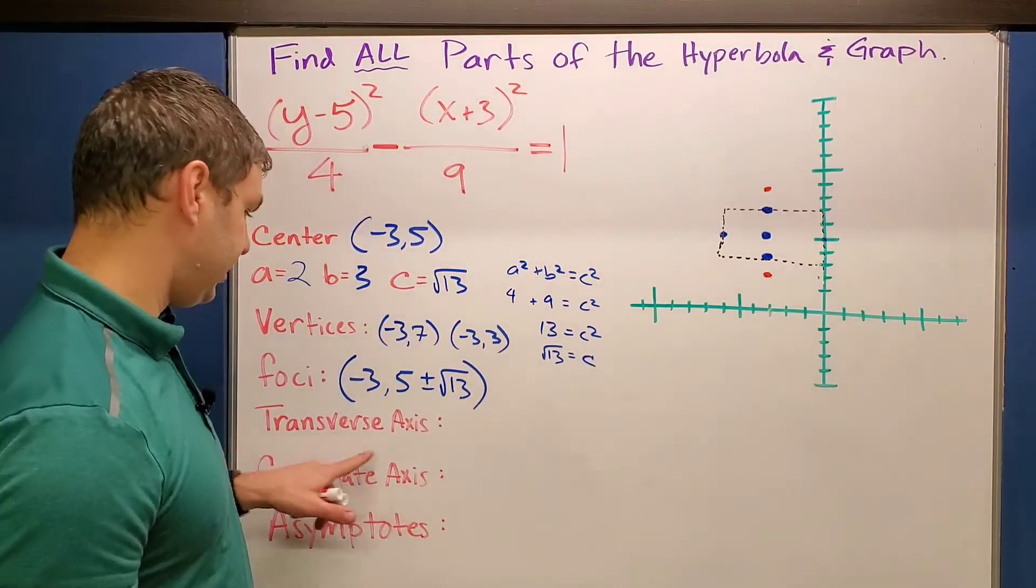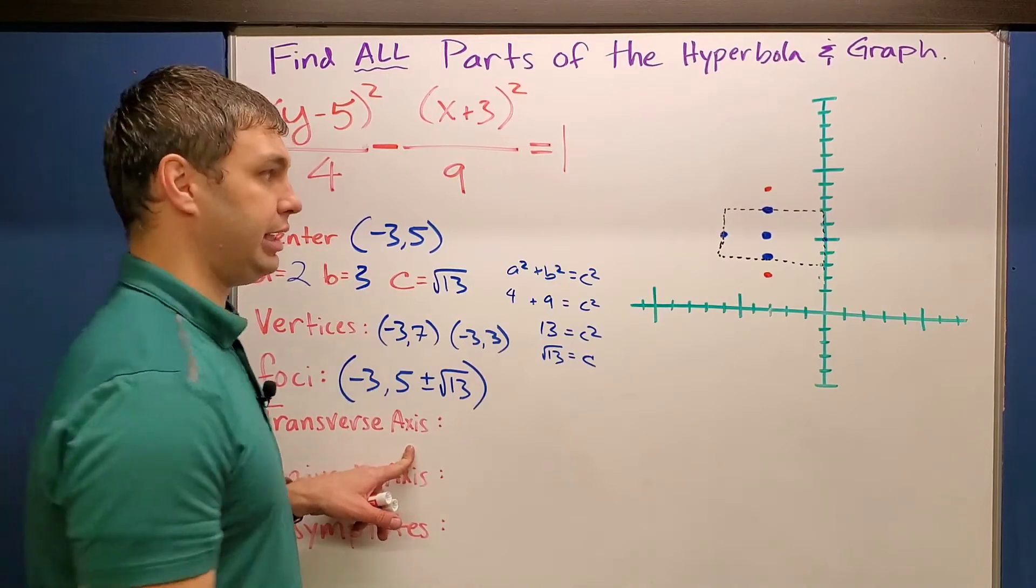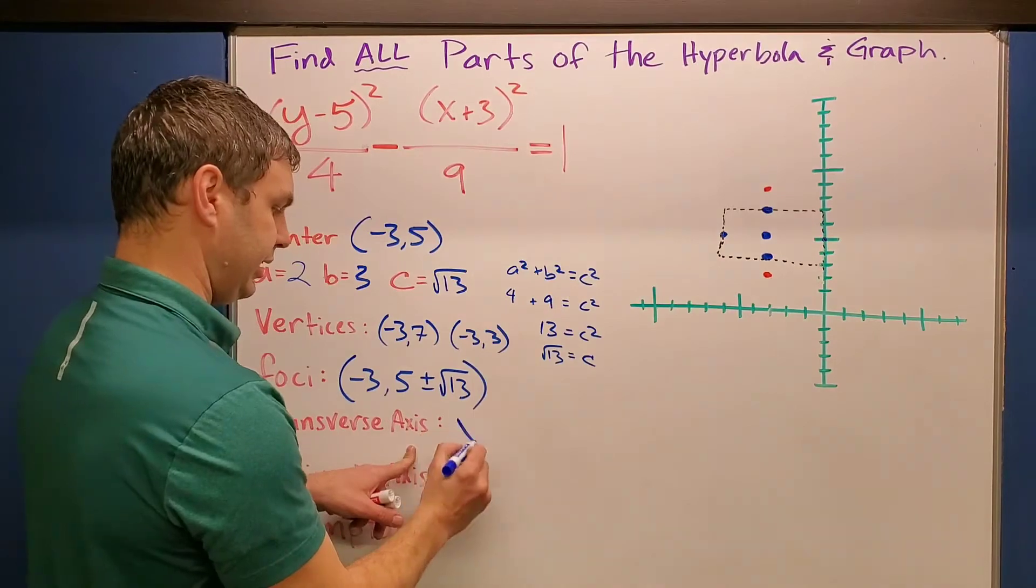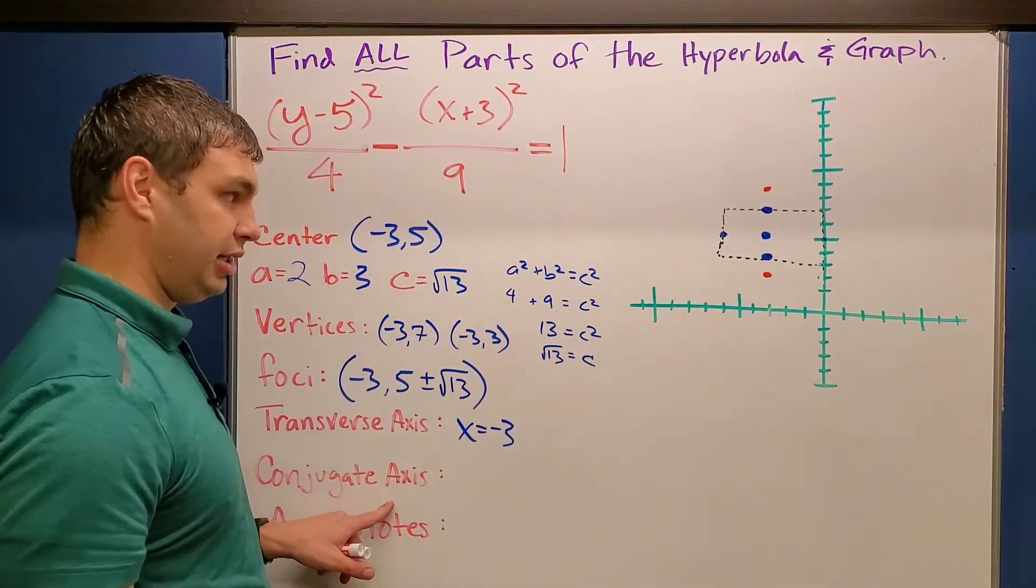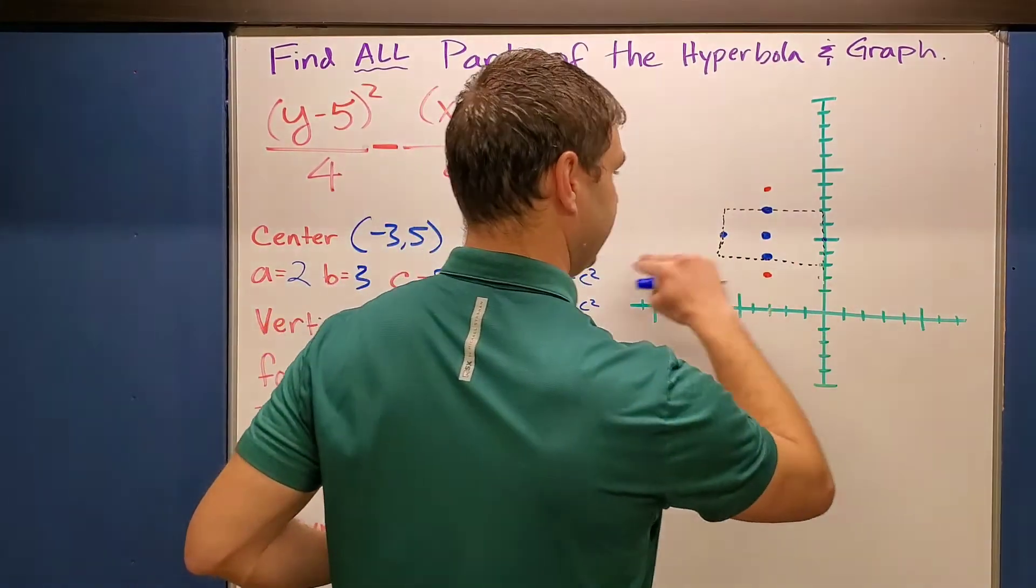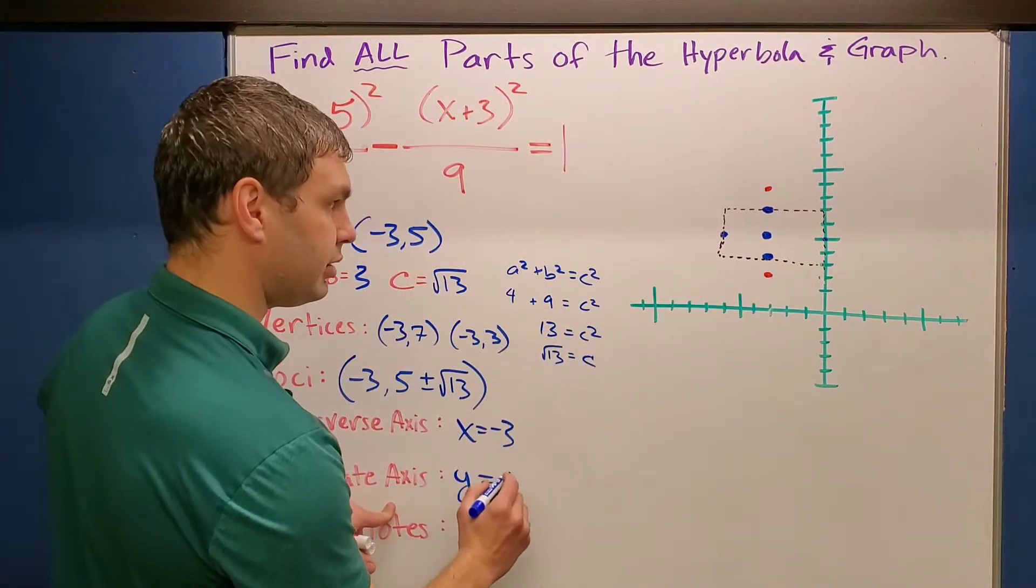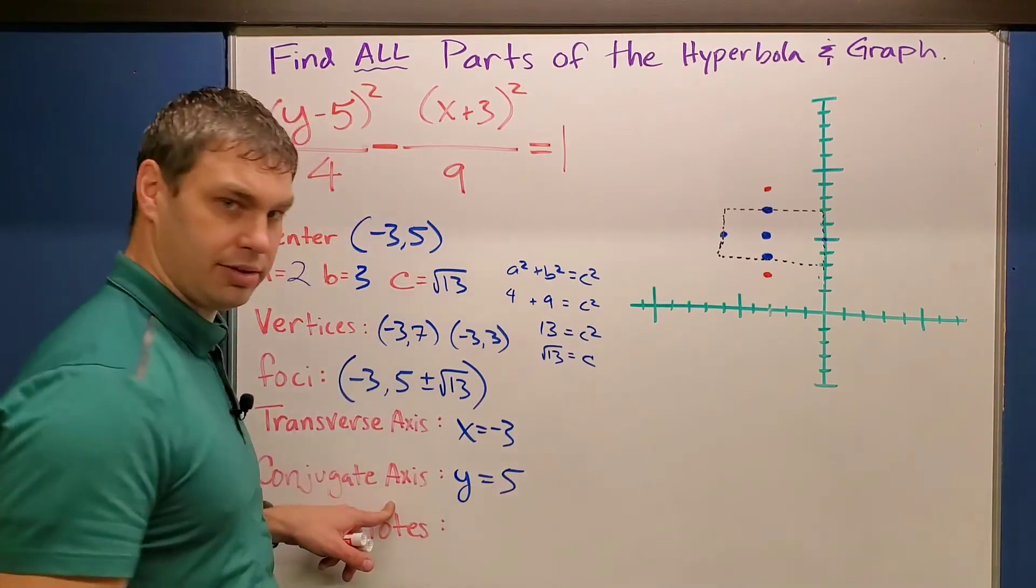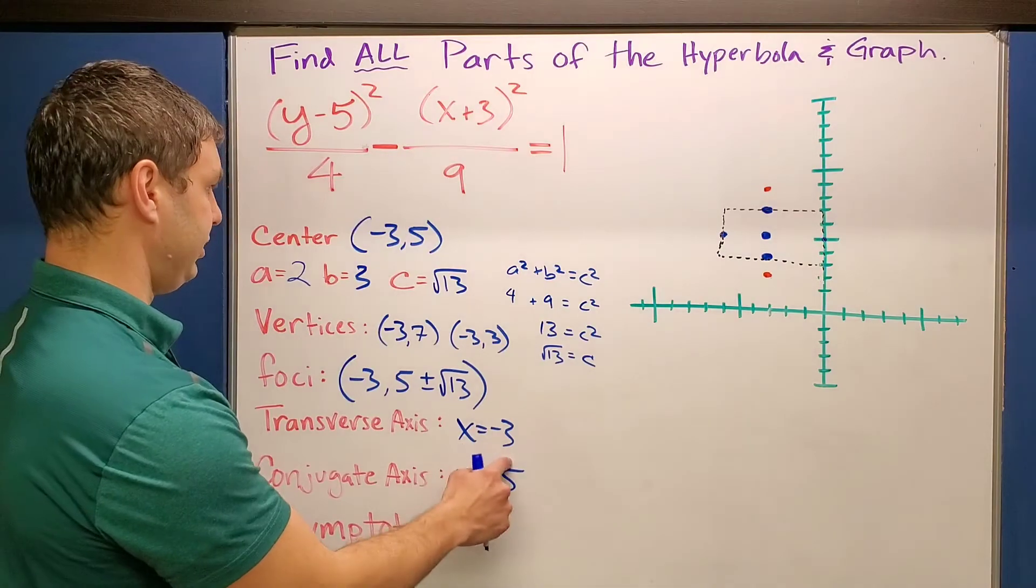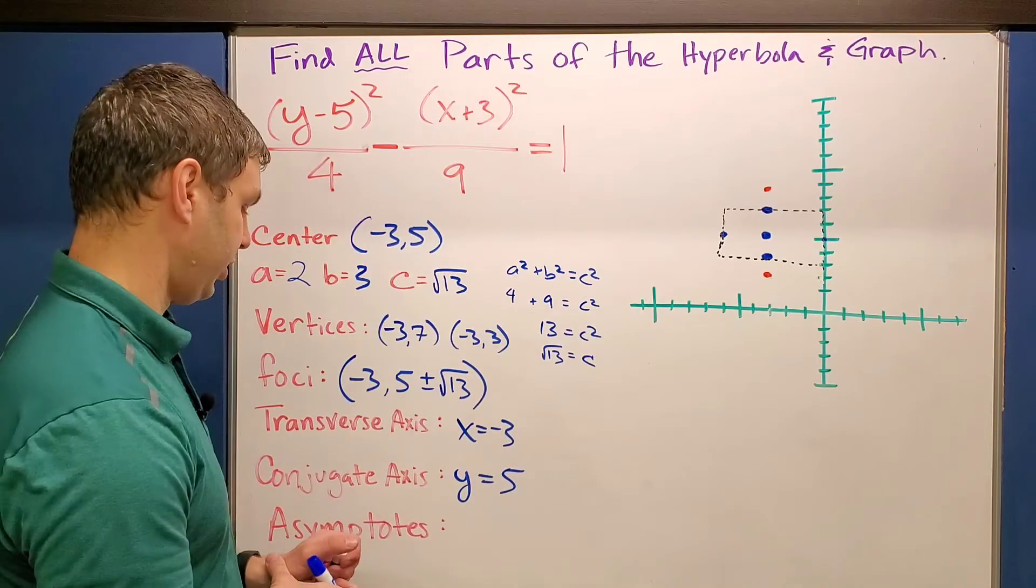The transverse axis is the axis that goes both through the vertices and the foci. So it's going to be this one. And we know that's the line x equals negative three. In this case, the conjugate axis is the one that goes through your b's. And this one is going to be just the line y equals five. And you'll notice that those actually line up with parts of your center. X equals negative three is the x value of your center. Y equals five is the y value of your center.